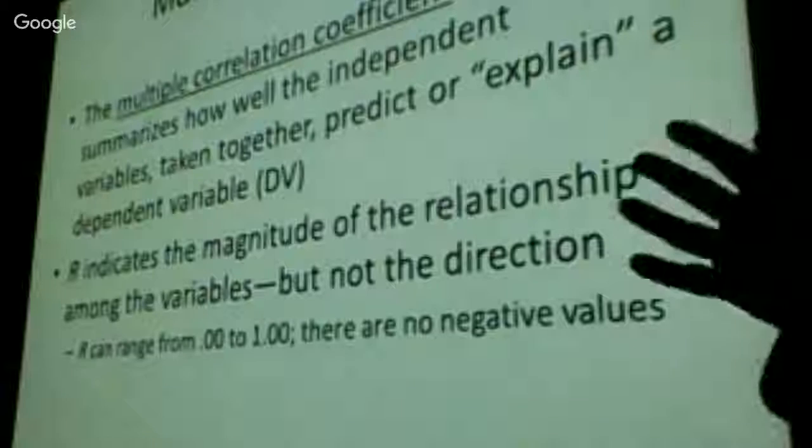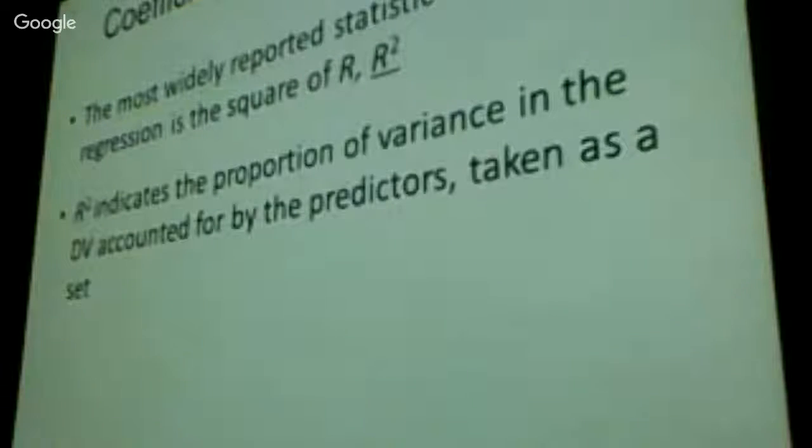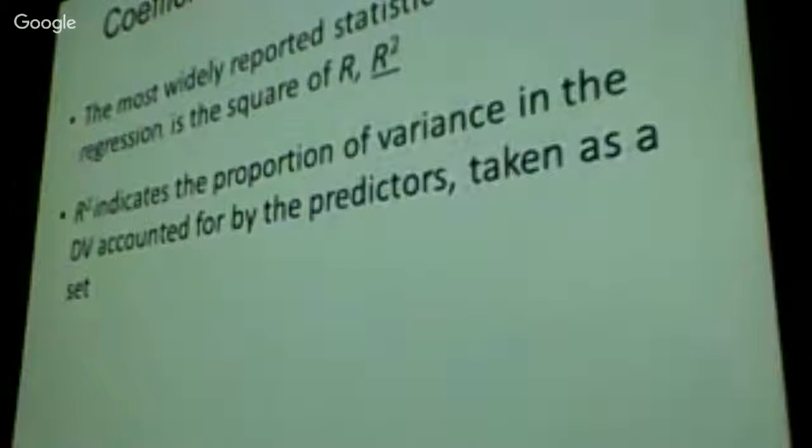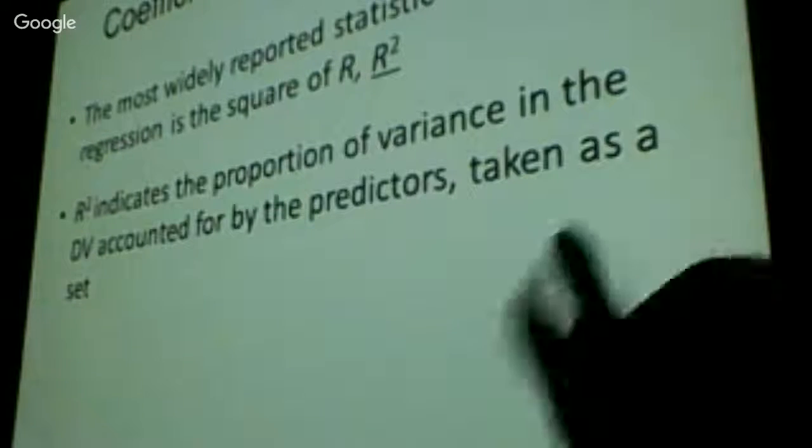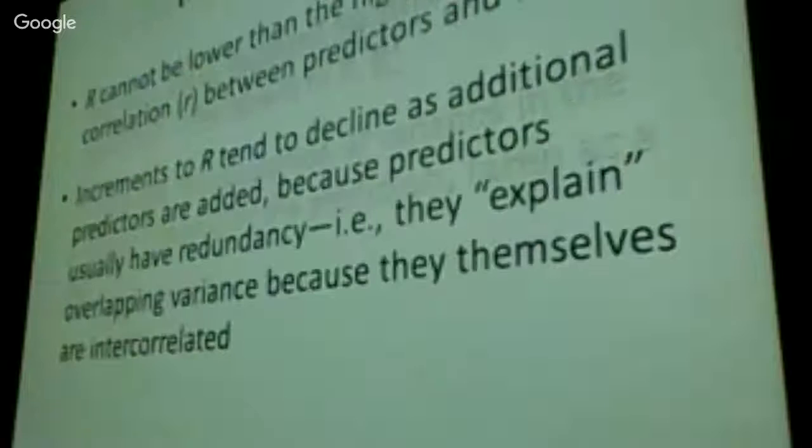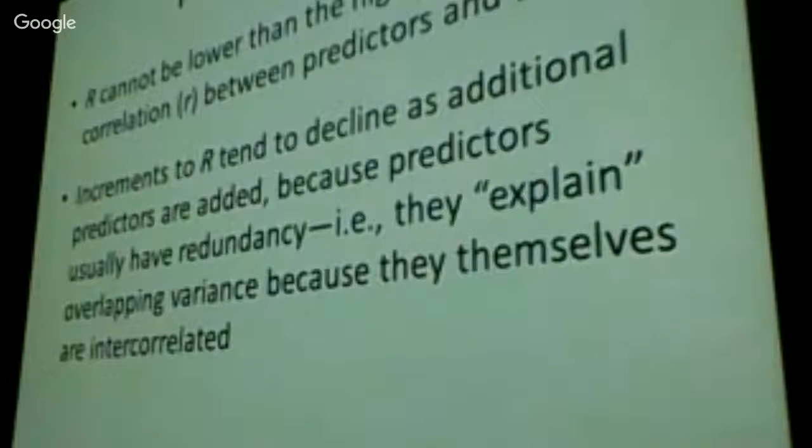So remember that r varies from minus 1 to 1. I have a minus correlation. R, capital R, doesn't. Capital R goes from 0 to 1. It does not become negative. That's a key distinction. Mostly because we're dealing now with multidimensional points, and it's hard to imagine what a negative number means in multidimensions. So again, much like the correlation coefficient, we mostly report capital R squared.